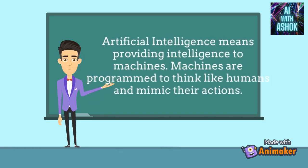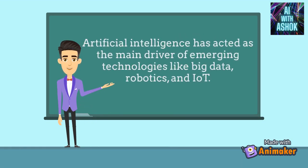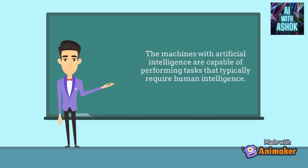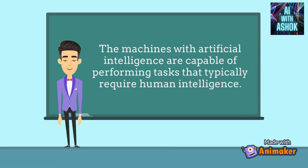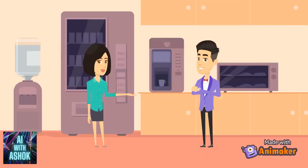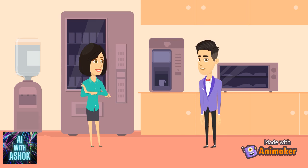Artificial intelligence has acted as the main driver of emerging technologies like big data, robotics, and IoT. The machines with artificial intelligence are capable of performing tasks that typically require human intelligence. AI can do whatever we human beings can do.